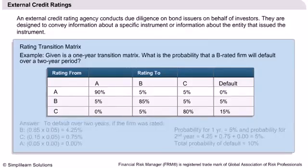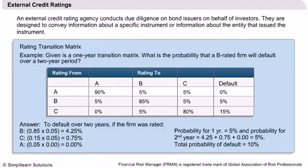The rating transition matrix shows the frequency of defaults over a given time horizon for bonds with a given rating. The example highlighted in the slide shows the transition of a firm from a rating of A to a default rating, which is 0%, from a rating of B to a default, which is 5%, and so on. We have calculated the probability that a B-rated firm will default over a two-year period, and tabulated it as shown in the slide.